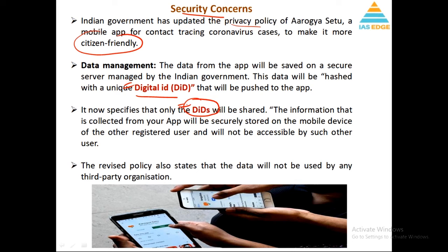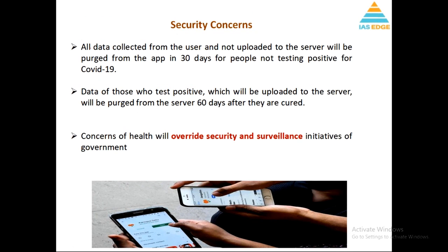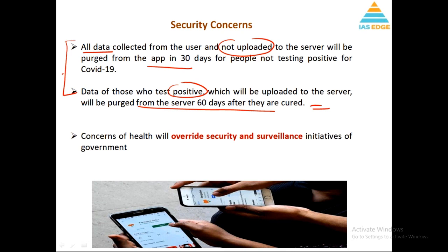Only the digital IDs will be shared, so whatever your information is will be mapped to a digital ID. The information collected on the app will be securely stored on the mobile device and will not be accessible by other registered users. The government has also stated in the revised policy that data will not be used by third-party organizations — not telecom companies, advertisement companies, or any firm. Additionally, data will not be uploaded to the server if you are in the green zone; it will not be saved in 30 days if the information is not positive. If you test positive, after 60 days that information will be removed from the server.